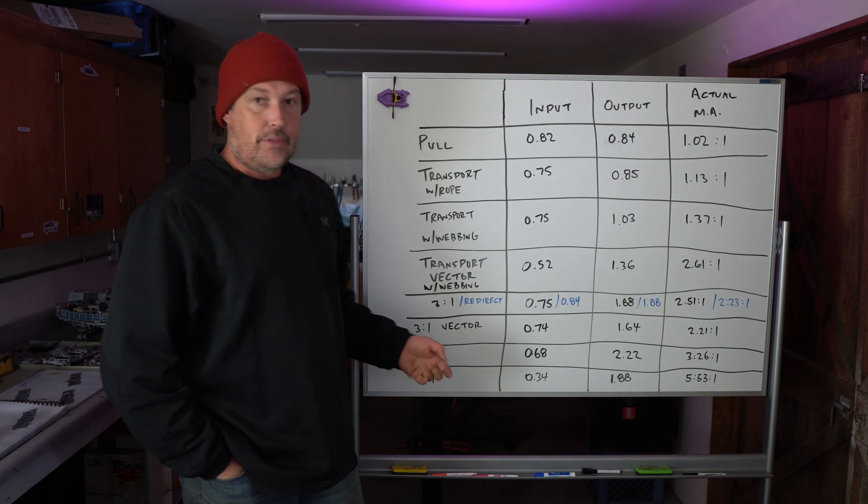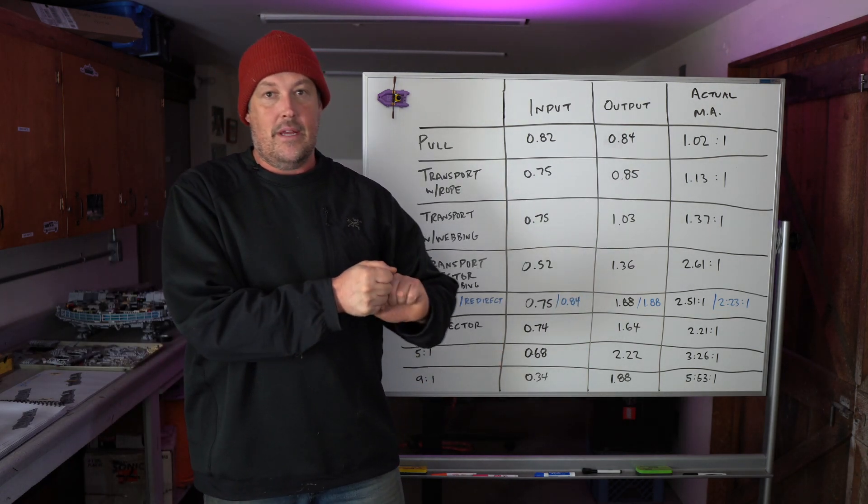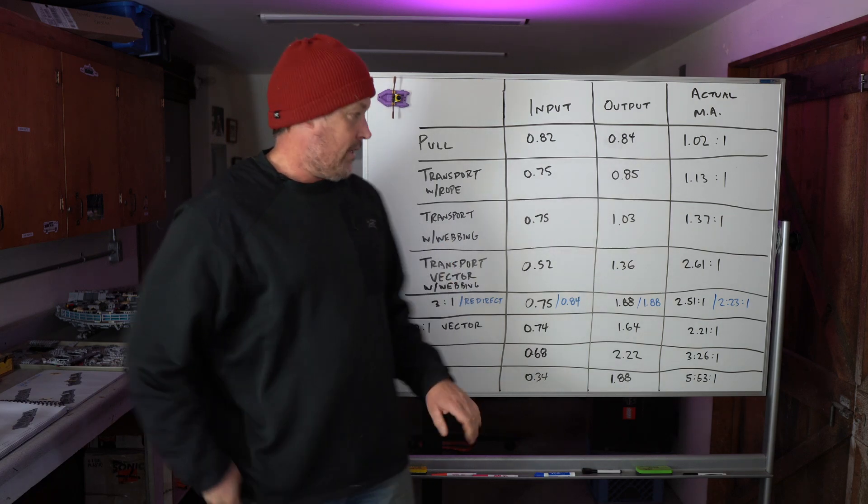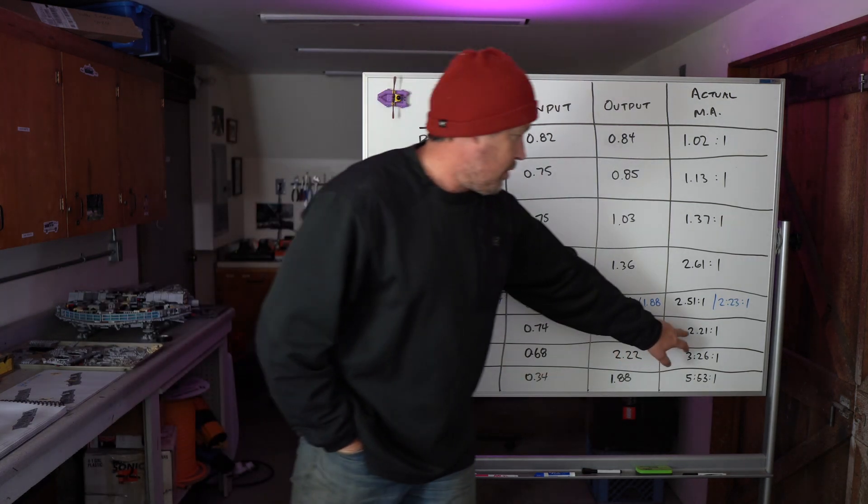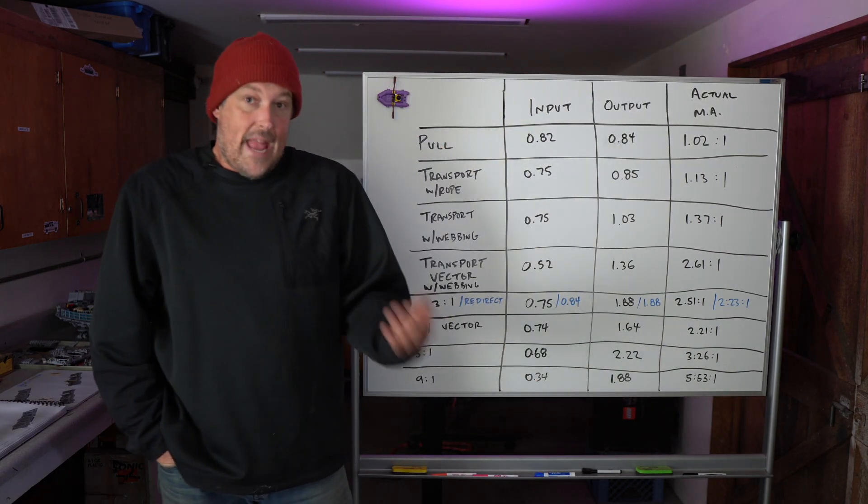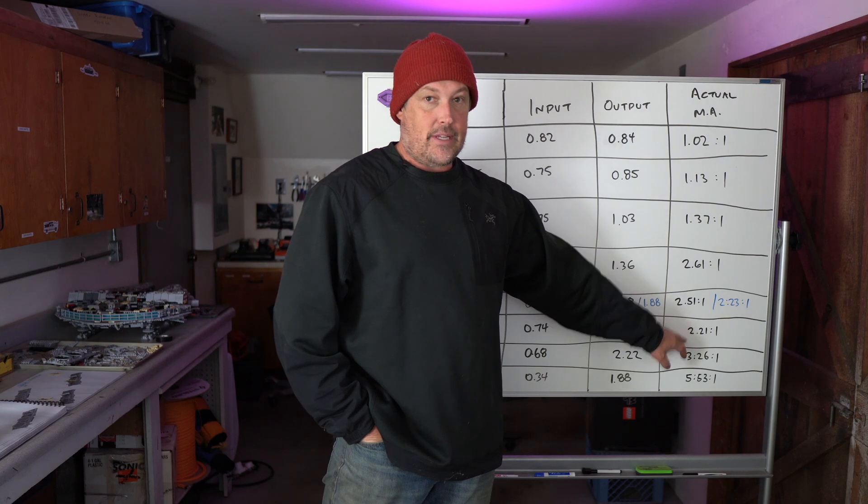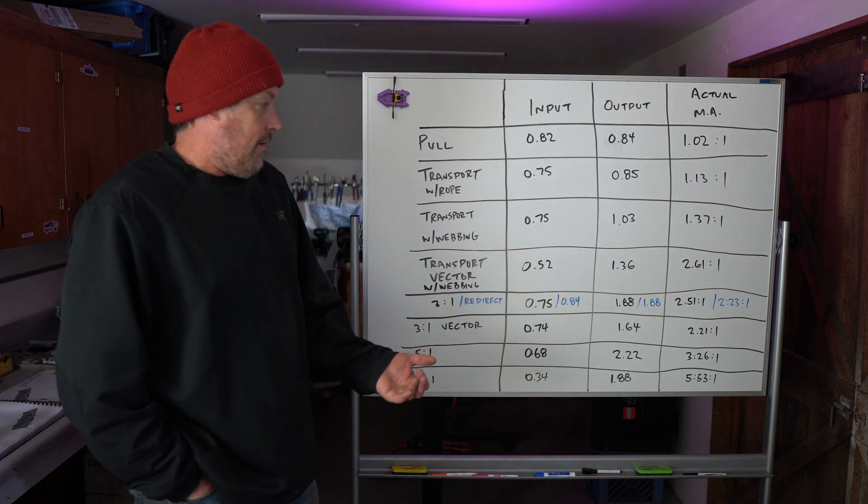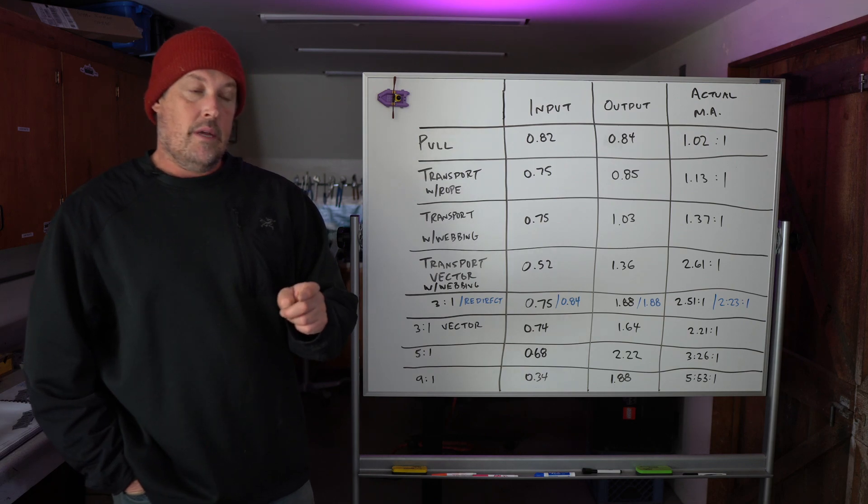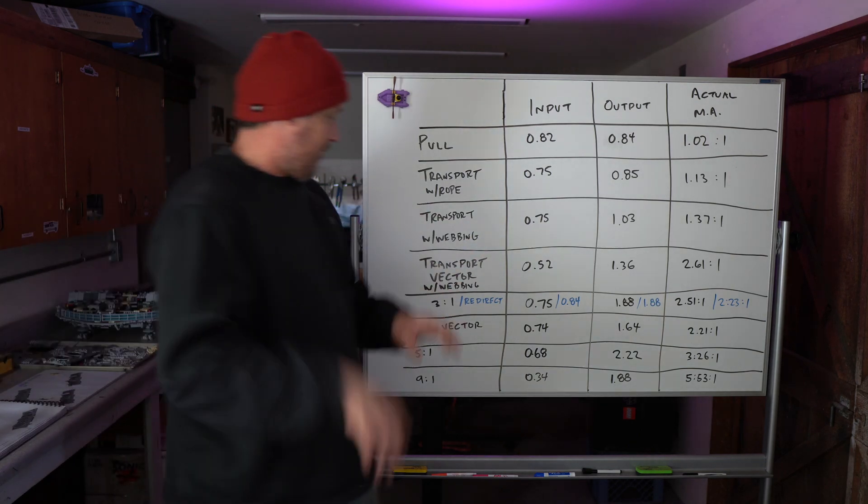But you get really good progress capture with a transport hitch. So I think the vector pull personally works better with a transport hitch because you capture all of your progress. When you do with a 3 to 1, you lose a little bit of your progress. Even if you have somebody minding the prusik, you're going to lose, there's a little bit of slop there. So anyway, we did a vector pull with a 3 to 1 and got 2.2 to 1, which is worse than just a 3 to 1. A 3 to 1 gave us 2.5 to 1. Vector pulling a 3 to 1 gave us 2.2 to 1. So it actually didn't act as well. It probably would have acted well if I had somebody minding the prusik. And that's a good experiment to do in the future.